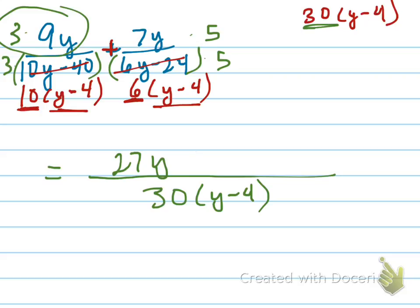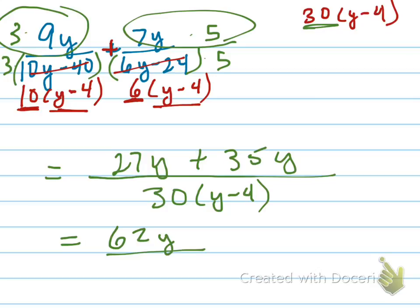This first term is going to be 27y, and this term, the second term, is going to be 35y. And 35 and 27 can be added together to get my final answer of 62y.